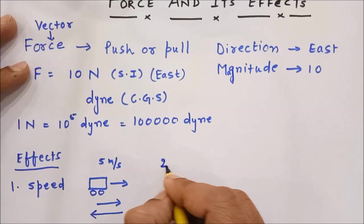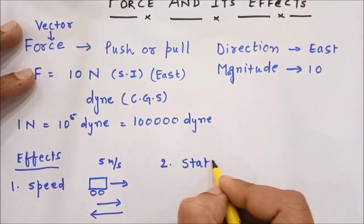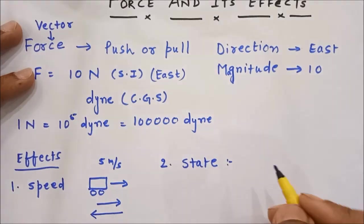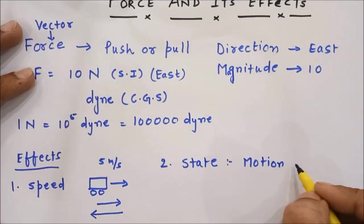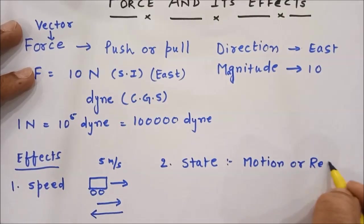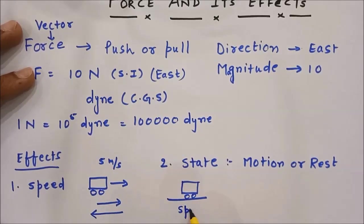Number two, state. Which state I mean to say motion or rest. If a body is at rest, suppose there is a car which is at rest, so its speed is zero.